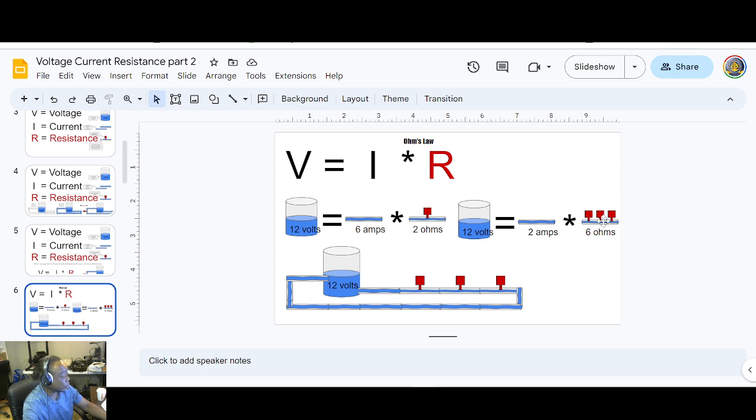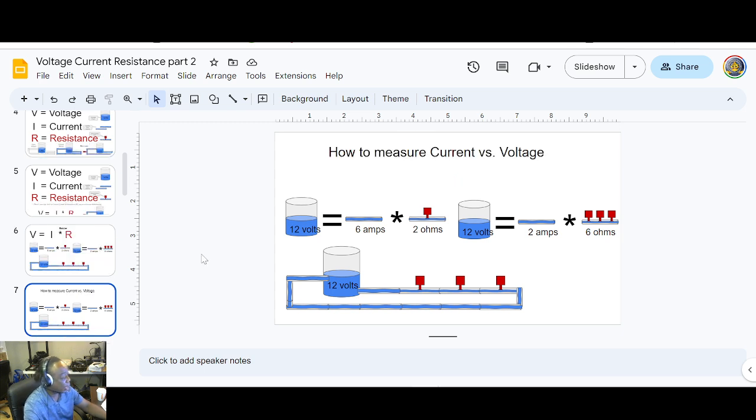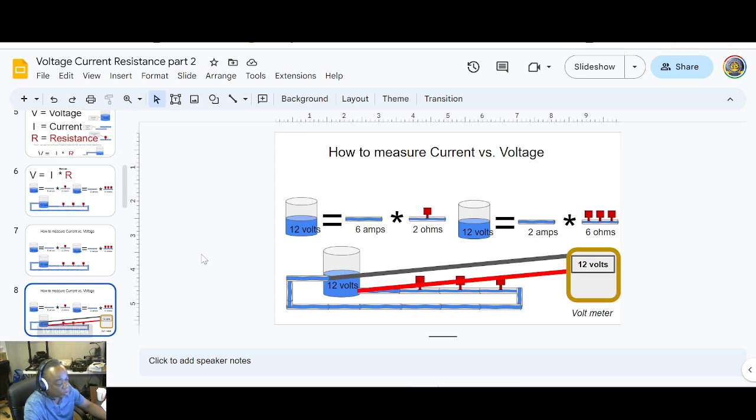Okay, so let's look at things with 6 ohms of resistance, or basically 3 resistors. And we know that the current inside this little system here is going to be 2 amps. Now, how to measure resistance.